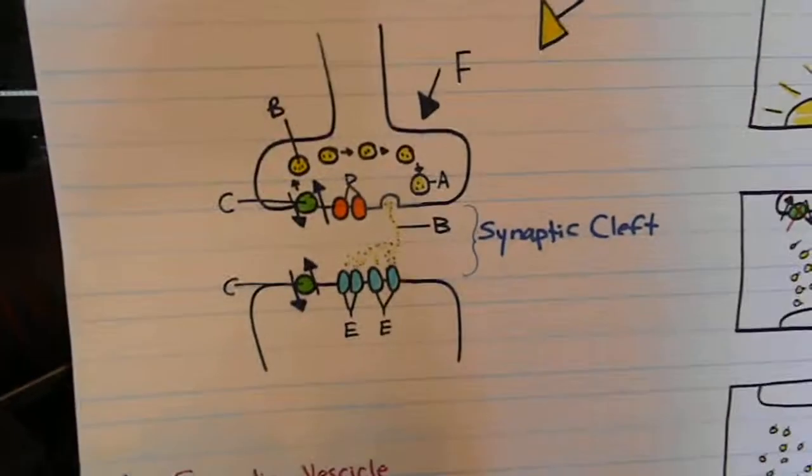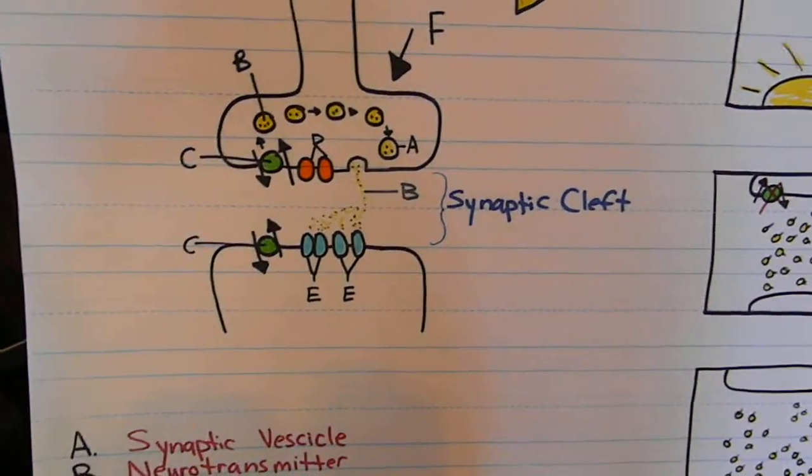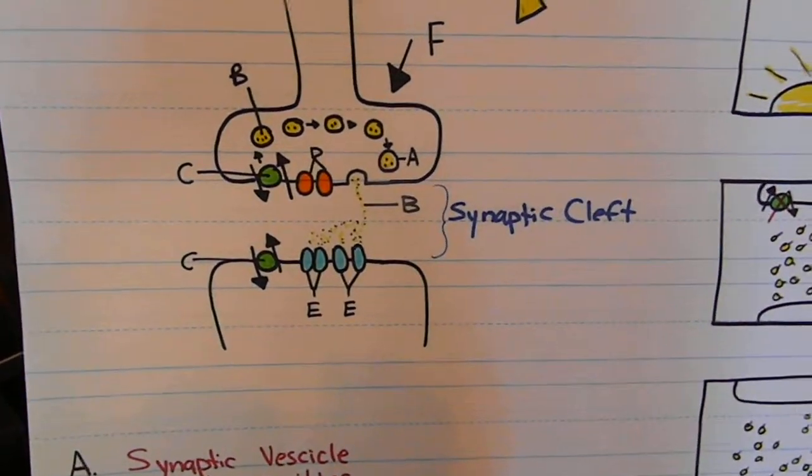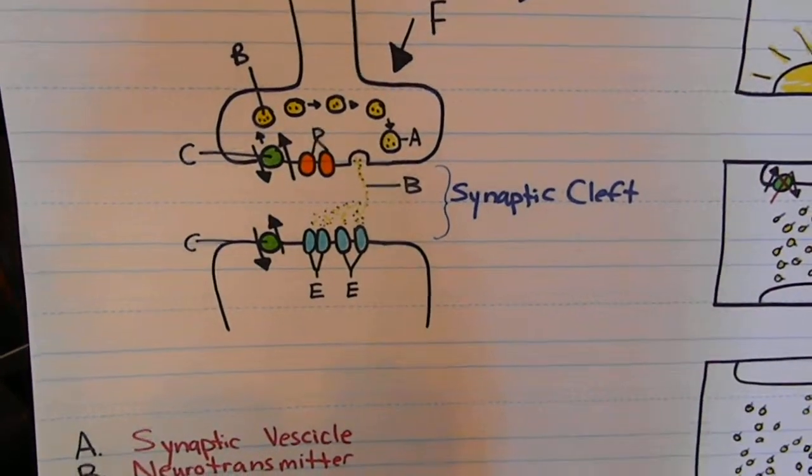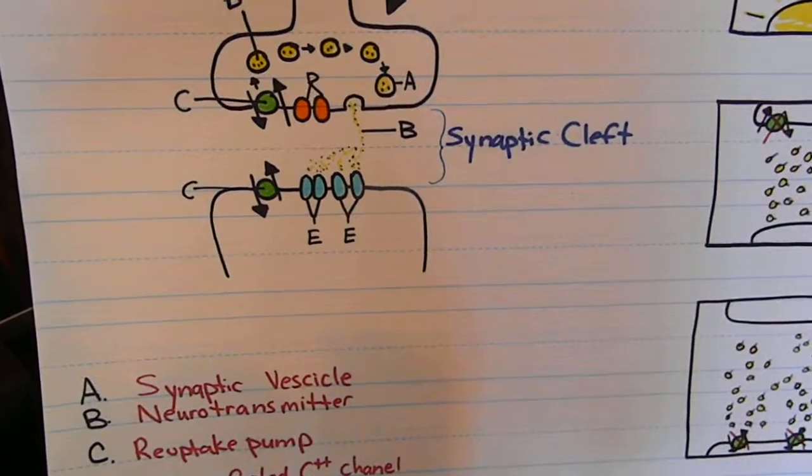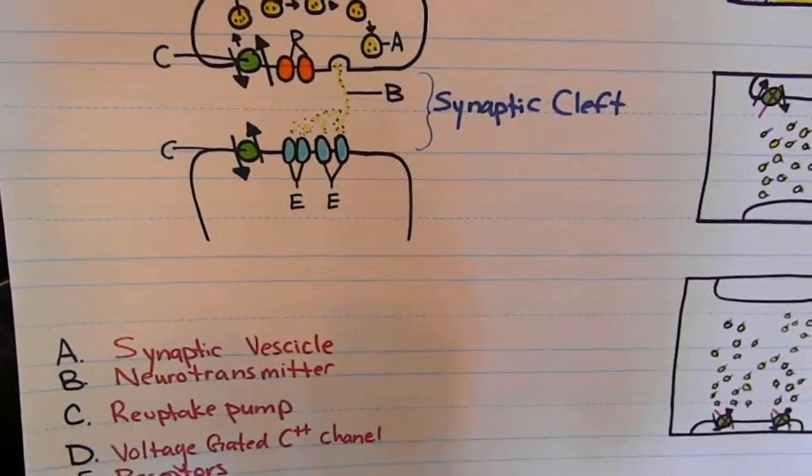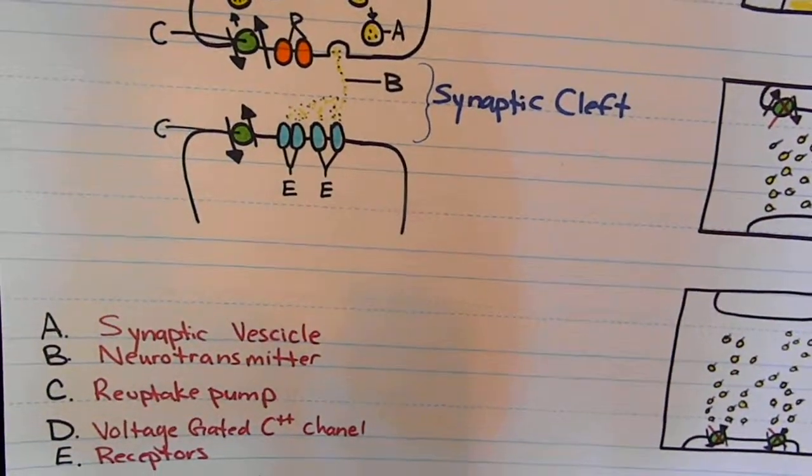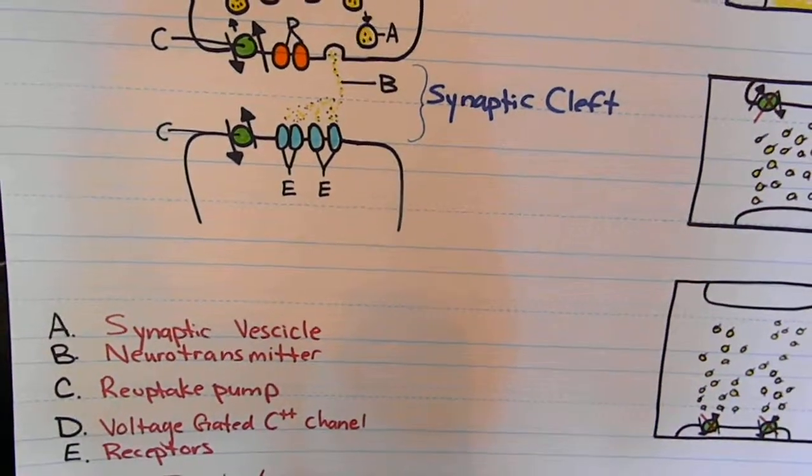Here at the axon terminal, you can see what's taking place. You have the synaptic vesicles (A), the neurotransmitter (B), the reuptake pump (C), the voltage-gated channels (D), and the receptors (E).